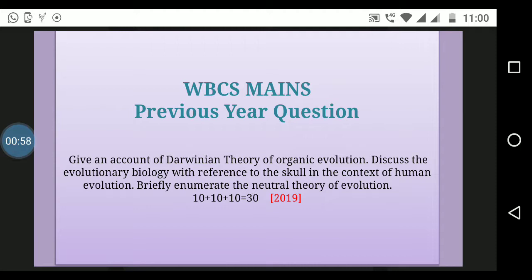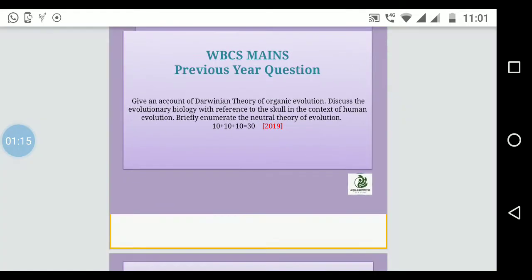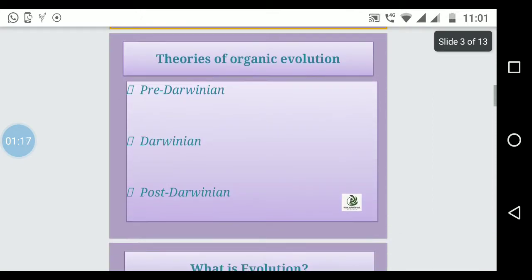Today we will discuss Darwinian theory of organic evolution, which contains 10 marks. Let's suppose we divide the marks as 3 plus 4 plus 3. First, what do you write for the first 3 marks? We will discuss the various theories of organic evolution.